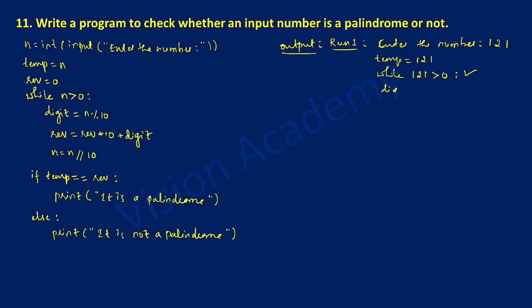Since the condition is true, the three statements execute. digit is equal to 121 modulo 10, which gives remainder 1. Next, rev is equal to rev (which is 0) into 10 plus digit (which is 1): so 0 times 10 is 0, plus 1 equals 1. Then n is equal to 121 floor division by 10, which gives quotient 12. So 12 is now equated to variable n. This completes the first iteration.